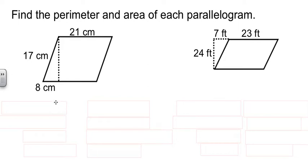Because we know heights are perpendicular to the base, we can do Pythagorean theorem. 8 squared plus h squared equals 17 squared.